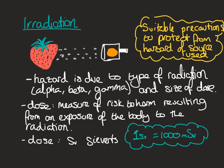A couple of things to remember. The hazard of irradiation is due to the type of radiation — that could be alpha, beta, or gamma — and we've already talked about the different hazards posed by those different types. It's also down to the size of the dose. The dose is defined as a measure of risk to harm resulting from an exposure of the body to the radiation.